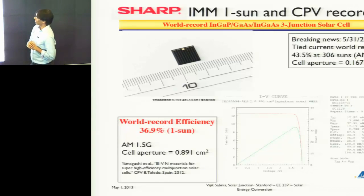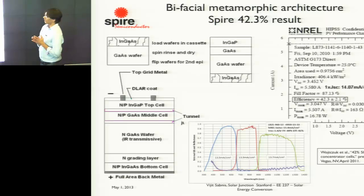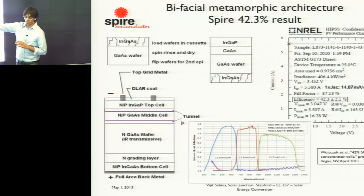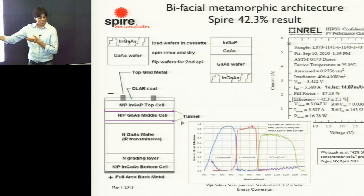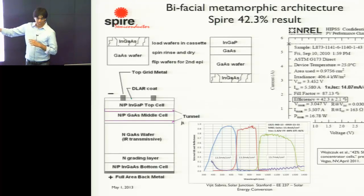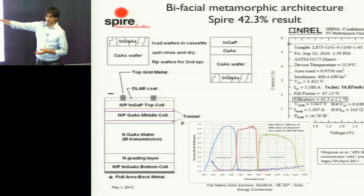Sharp, a Japanese company, tied Solar Junction's first world record, achieving 43.5% on a one-centimeter cell at a concentration of about 300 suns. Spire, based in New Hampshire, used a hybrid architecture — growing the top two junctions lattice-matched on one side of the wafer and a metamorphic InGaAs junction on the other side — achieving a world record at that time of 42.3%. In summary, there has been a dramatic evolution in technology to access the infrared part of the solar spectrum, because there are no lattice-matched compounds between germanium and gallium arsenide, forcing very different epitaxial conditions and wafer processing.